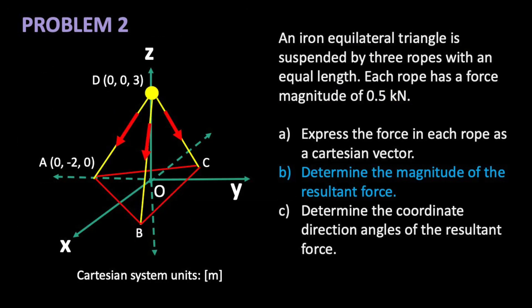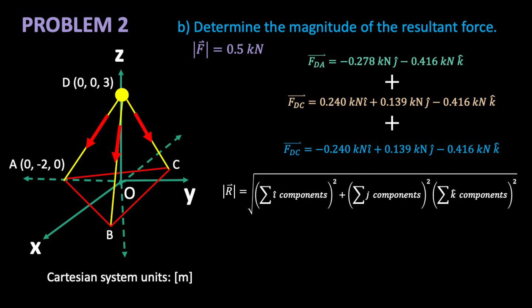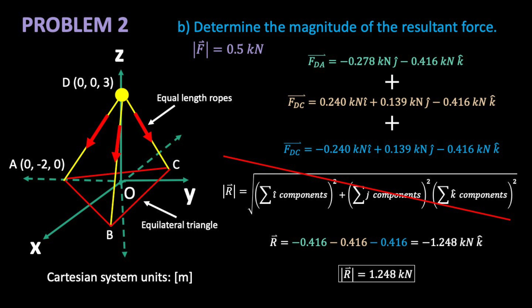Part B. The magnitude of the resultant force. Add the like components of our Cartesian vectors. Then, take the square root of the sum of the squares. Just kidding! I'm lazy. Thanks to symmetry and equal forces, we know that the forces in the x and y direction will cancel each other. Our resultant force magnitude is 1.248 kilonewtons, acting in the z direction.